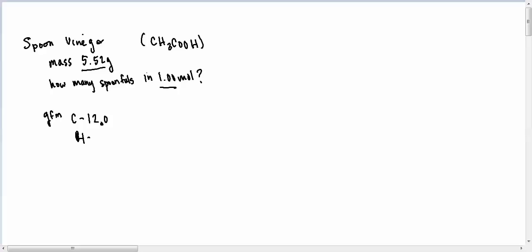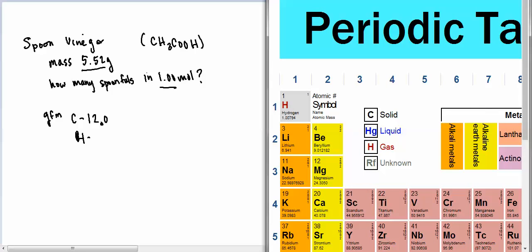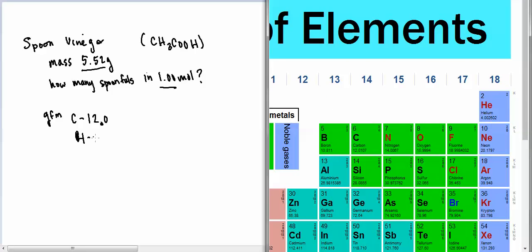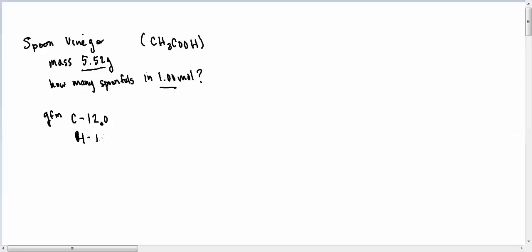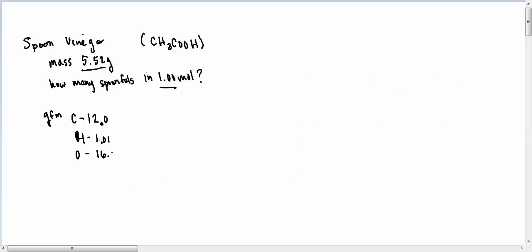The H is 1.007, so I'll put 1.01, and the O is 15.994, so that would be 16.0. Now, in order to calculate this out, I just need to figure out how many C's I have. I have two of them, the H's I have four of them, and the O's I have two of them. So I use my calculator.